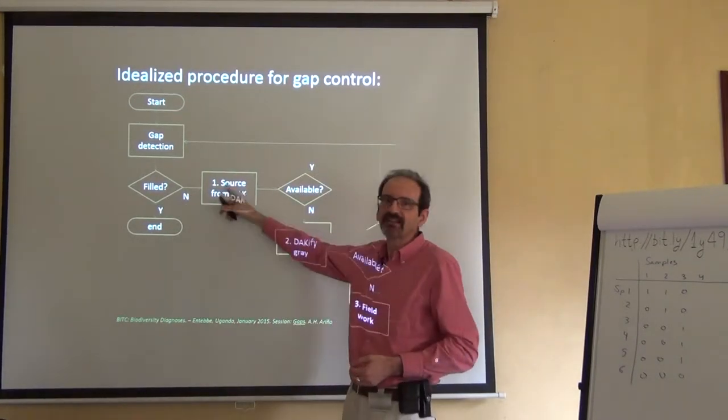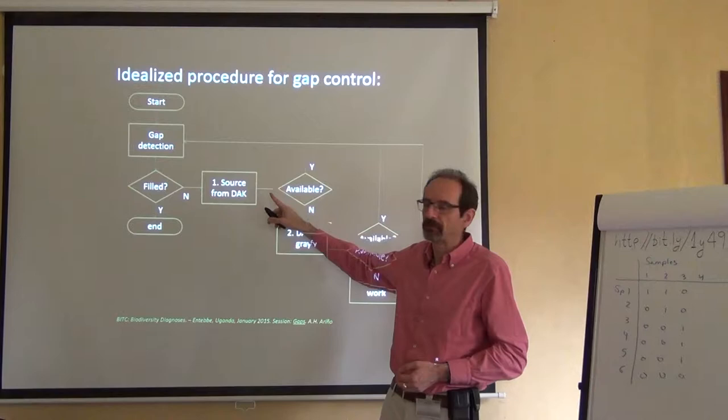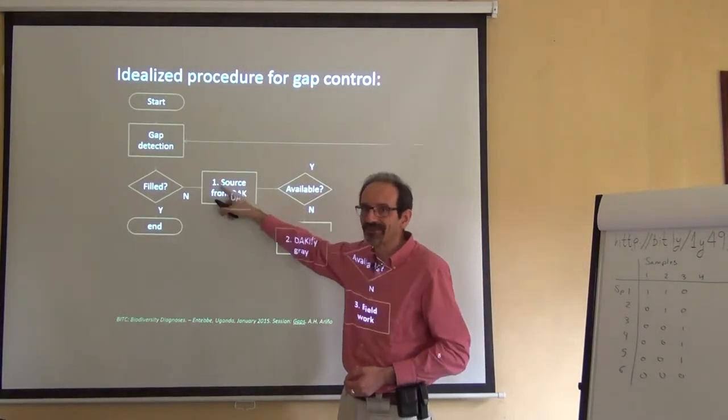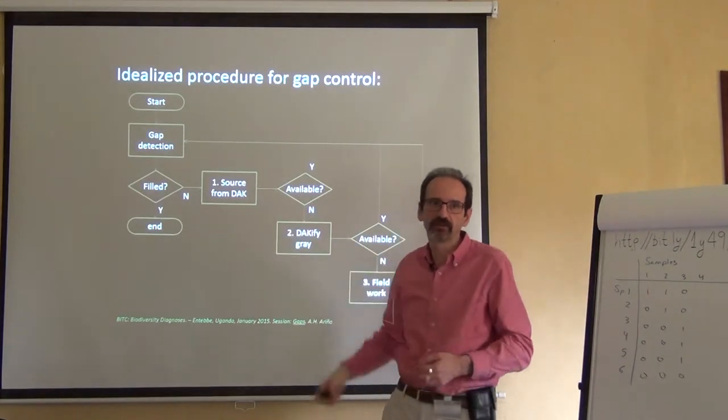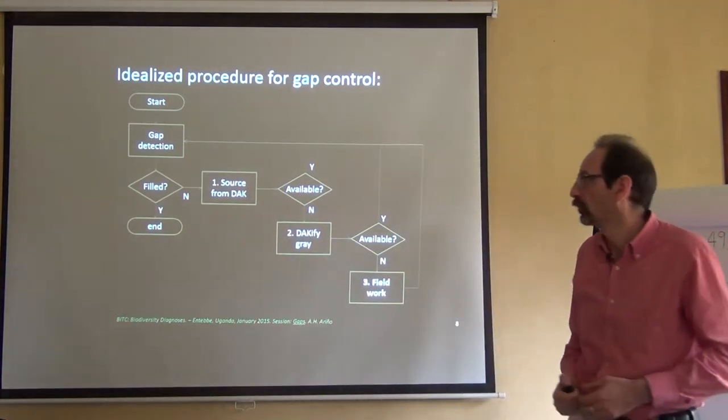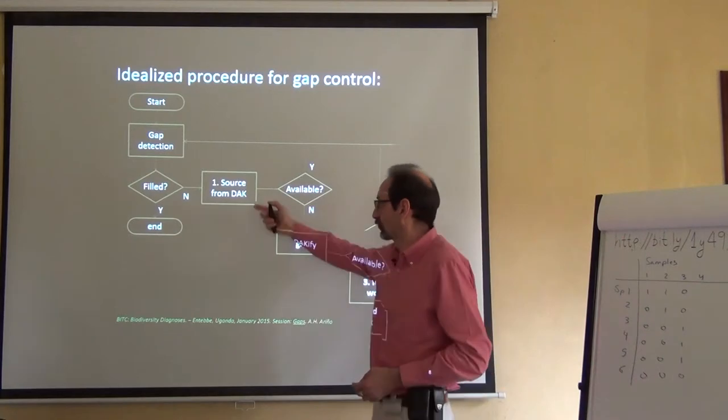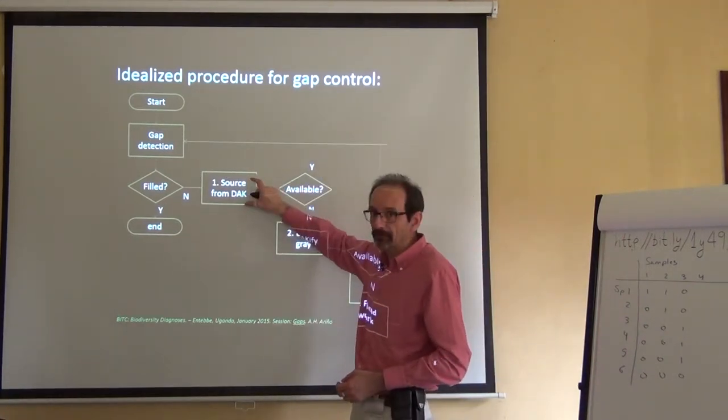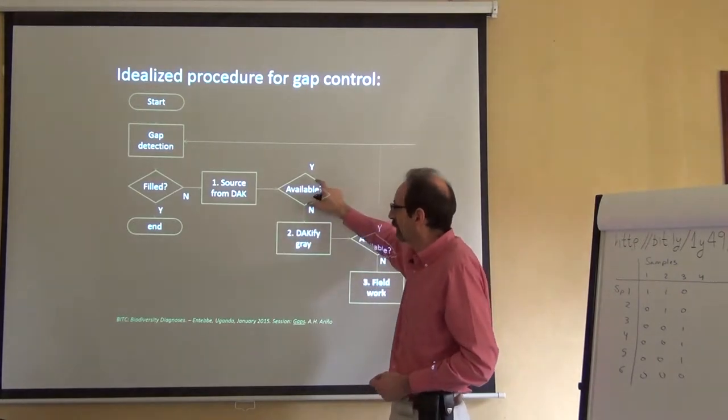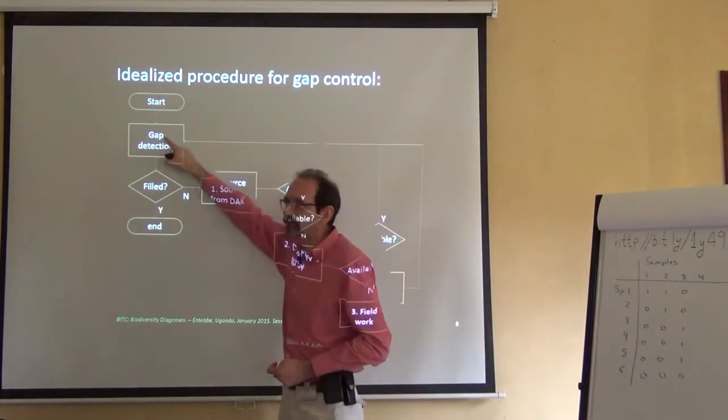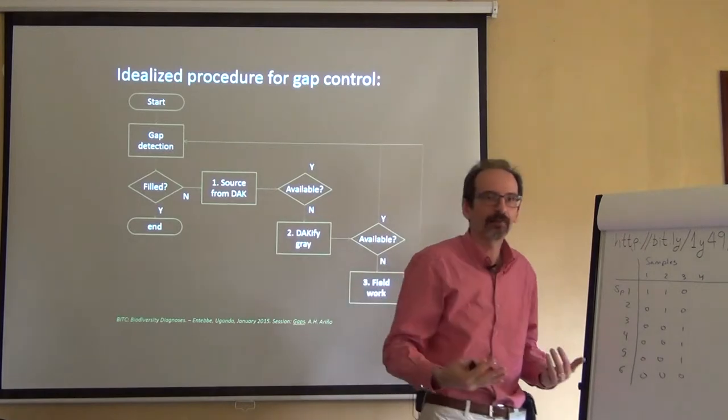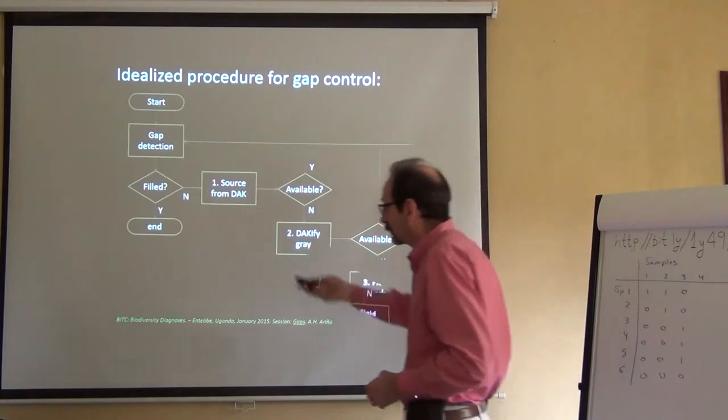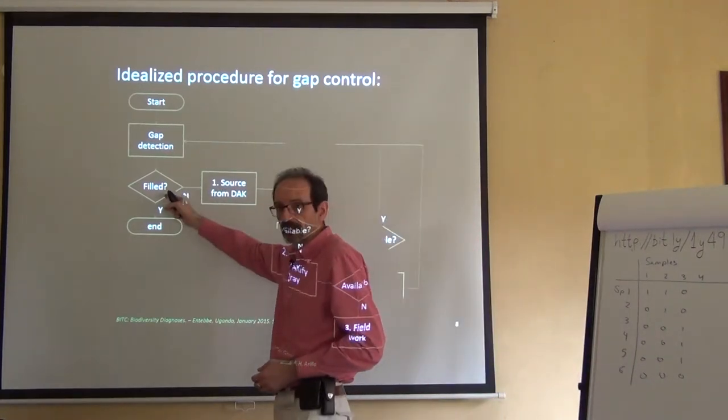But if it's not filled, we might try to fill the gap. Obviously, the easiest way to try to fill the gap is to look if there is DAC available, if there is digital knowledge available. If there is, we try to fill or to source from DAC. But whenever we fill a gap from DAC, and it's available, we have to go back to gap detection, because by filling a gap, we might perhaps open a different gap. So it will continuously cycle until we are sure that the gap is filled.